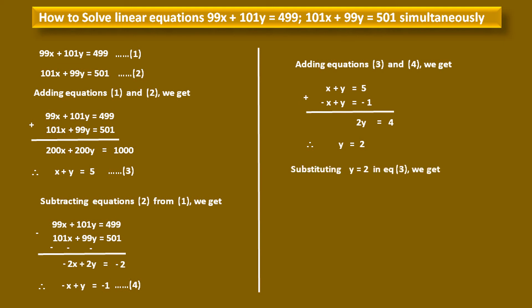Substituting y = 2 into equation 3: x + 2 = 5. Subtracting 2 from both sides, we get x = 3. This is the value of variable x. Hence, the solution of the given linear equations is x = 3, y = 2.